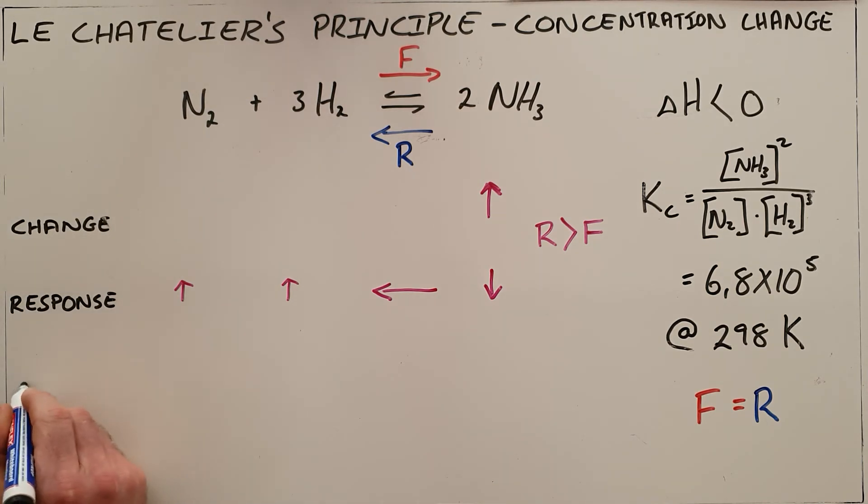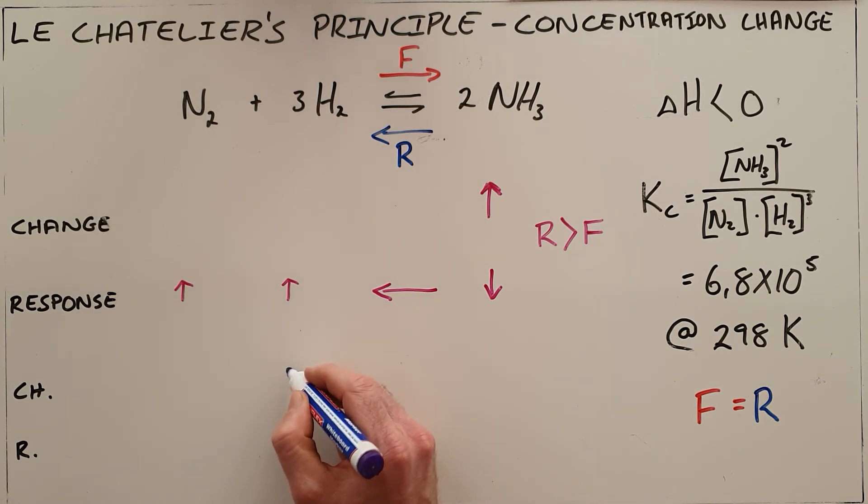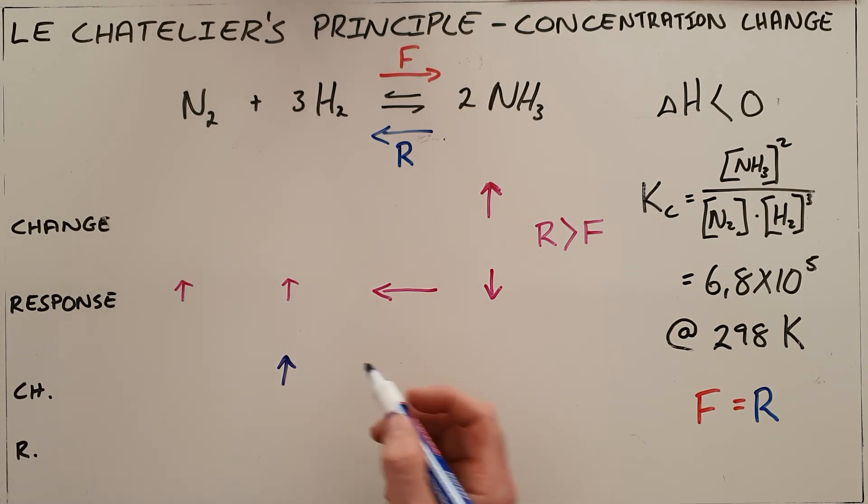Once again, we can make another change and see what the response is by asking what would happen if we were to suddenly increase the amount of hydrogen present in this reaction. So that is the change, the external change. Le Chatelier's principle says it will try to undo what we have done and it will try to decrease what I have increased.